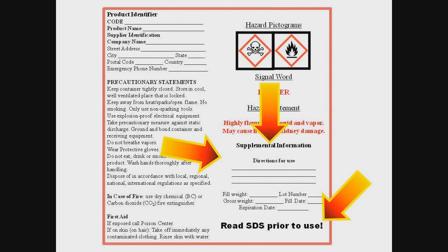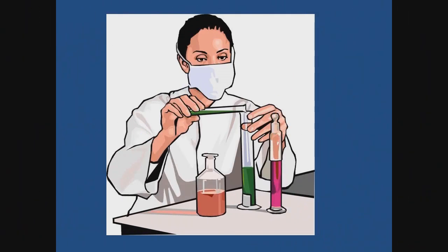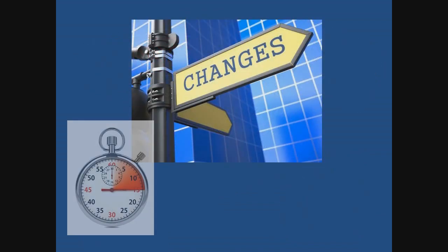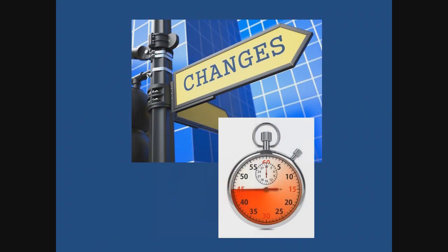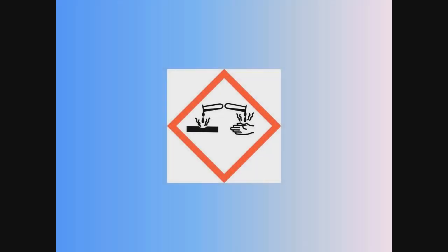You may also see statements pertaining to supplemental information — this could be information added at the discretion of the manufacturer or distributor, or information required by another regulatory agency. If a chemical manufacturer, importer, or distributor becomes aware of a new hazard for a chemical they produce, they have three months to update the label and the safety data sheet. For example, if new research finds that a product was recently found to be carcinogenic, the manufacturer, importer, or distributor will have three months to change the label and safety data sheet to include the new carcinogen health hazard information.